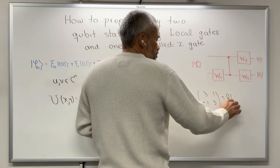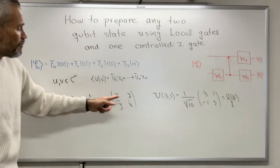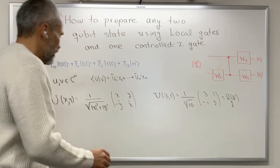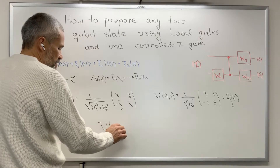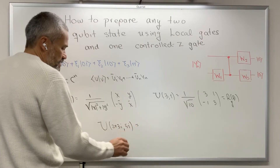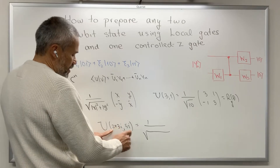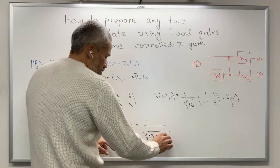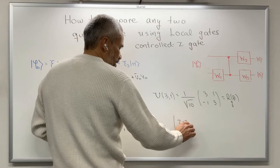Notice that this is a rotation R_y of some angle. In general, if x and y are real numbers we will have a rotation R_y. Another example: U(2+3i, 5i) equals 1 over the square root of ‖2+3i‖² + ‖5i‖², which is 13 + 25.